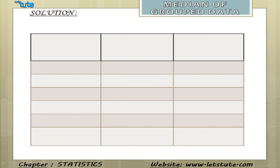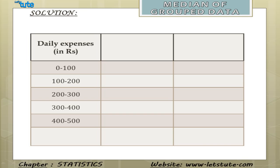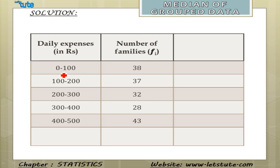The best way to organize any data is to tabulate it. The first column in our table should be the daily expense in terms of rupees, listed in ascending order — which it already is. The second column should be the frequency, or the number of families. For example, 38 families have a daily expense of 0 to 100 rupees, and 37 families have a daily expense of 100 to 200 rupees, and so on. The sum of all frequencies, denoted as n or sigma fi, is 178.